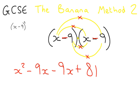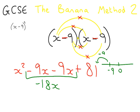So that's been expanded. Now to simplify, we're doing minus 9x, take away 9x. So if we're at minus 9, we take away another 9, we're going to be at minus 18. So minus 9x take away 9x is minus 18x. That means that our final answer is x squared, take away 18x, plus 81.